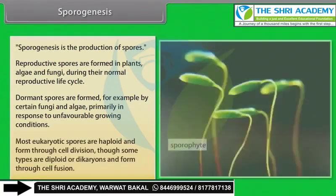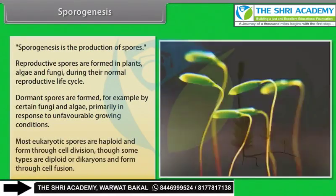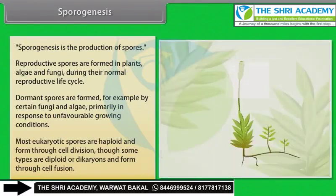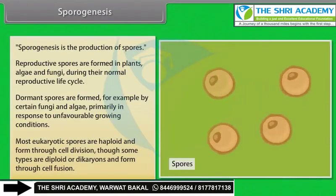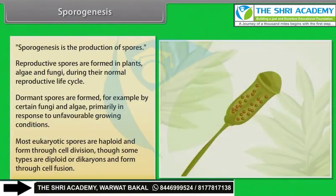Most eukaryotic spores are haploid and formed through cell division, though some types are diploid.